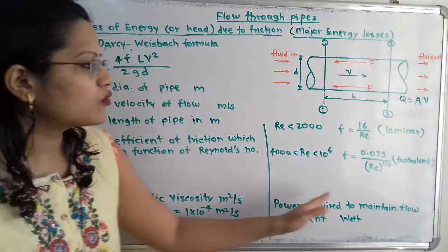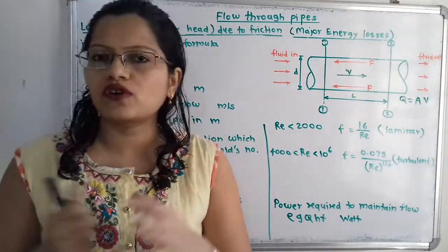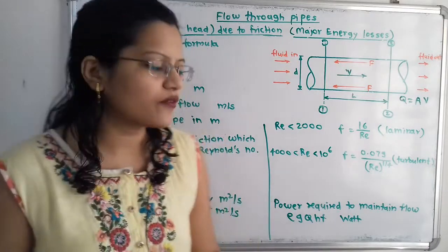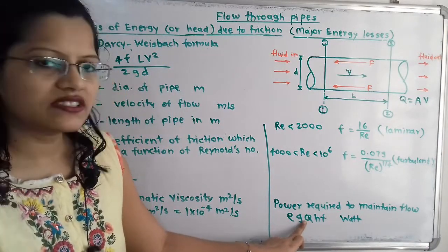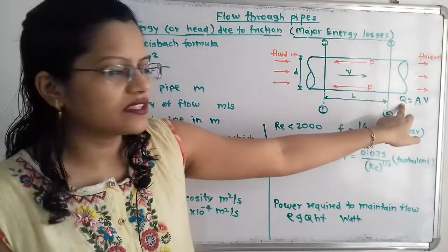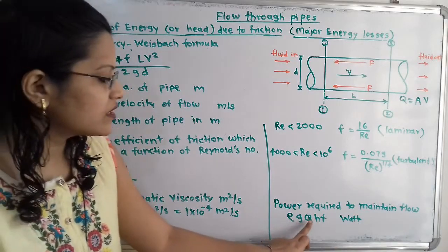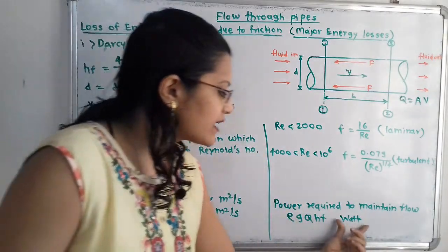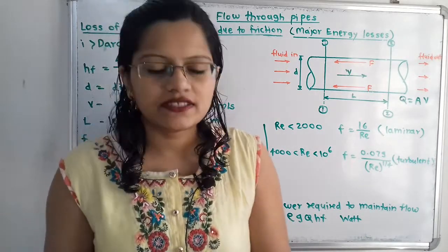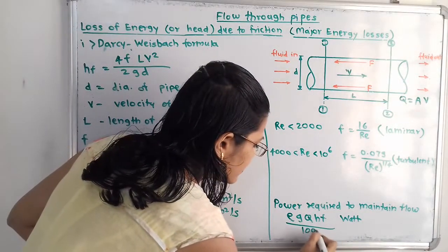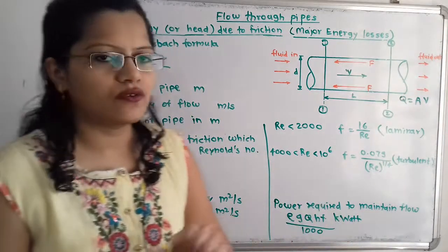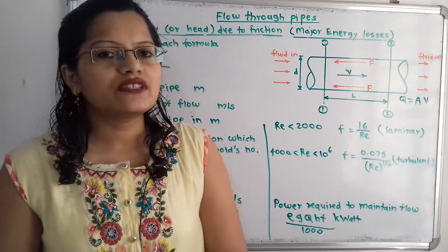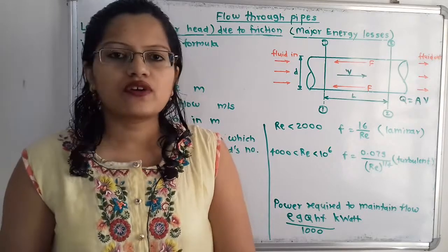Now, what is the power required to maintain the flow? Because of friction there is a loss of energy or loss of head. The formula is: Power = ρ × g × Q × HF, where g = 9.81. This gives the answer in Watts. To convert to kilowatts, divide by 1000. These are the important formulas, and studying them in detail will allow you to solve any type of question on head loss due to friction.